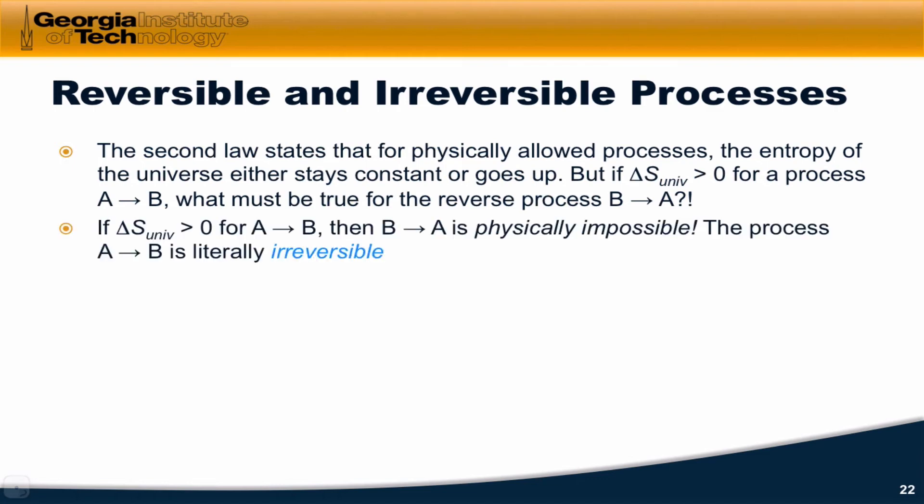If delta S of the universe is greater than zero for A to B, such that it's allowed by the second law of thermodynamics, then B to A must be physically impossible because it has delta S less than zero for the entire universe. It decreases the entropy of the universe. That means the reverse process cannot occur.